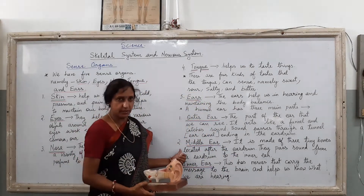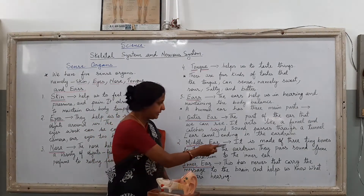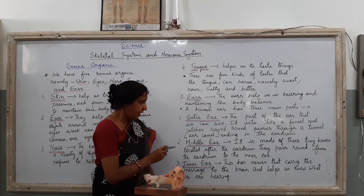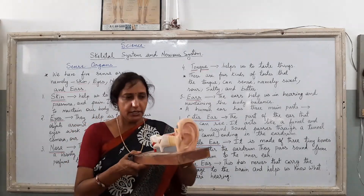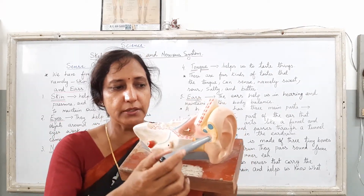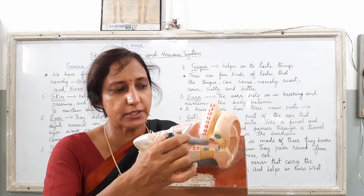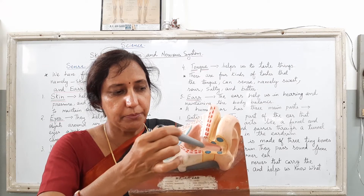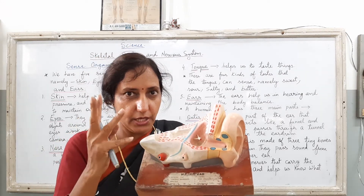Now we are talking about the next part, that is the middle ear. What does the middle ear do? It is made of three tiny bones located after the eardrum. They pass sound from the eardrum to the inner ear. Here I am trying to show you the outer ear first, then moving on to the middle ear. Before the middle ear, here is the eardrum, and after the eardrum, here is the middle ear, which has three tiny bones.